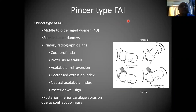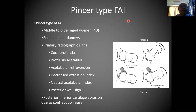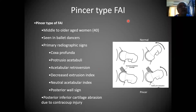What is common with pincer? These are middle-aged to older-age patients. Females are more common with pincer. Seen in a lot of ballet dancers because they have excessive additional movement — they are absolutely hyperlax people. They do extreme amounts of flexion, rotation in the hip, so they are bound to get this. Primary radiographic signs are: coxa profunda, protrusio acetabuli, acetabular retroversion, decreased extrusion index, neutral acetabular index, posterior wall sign, and posterior inferior cartilage abrasion — that is the contrecoup.